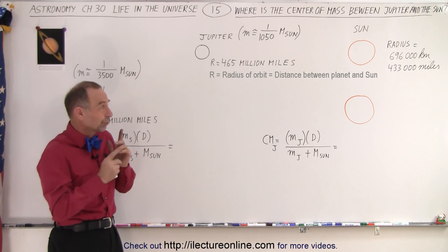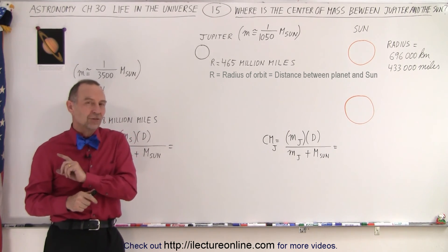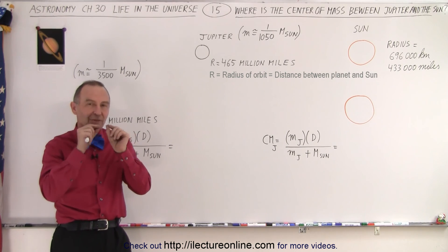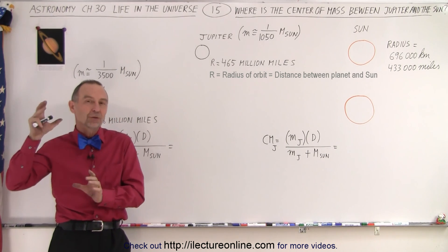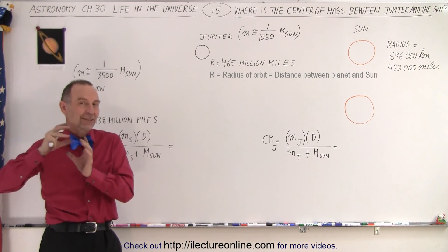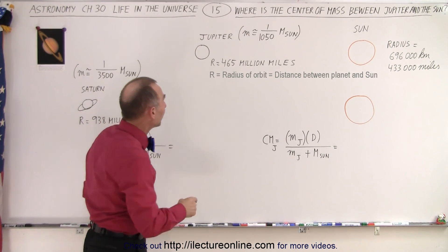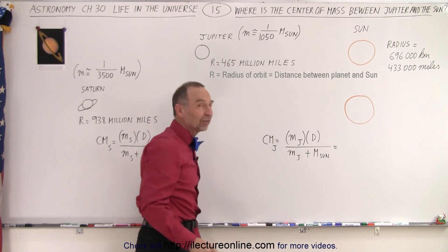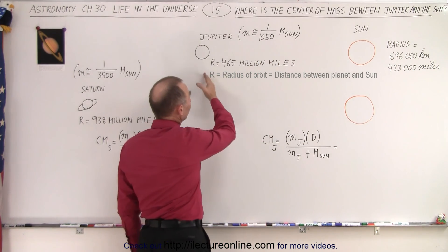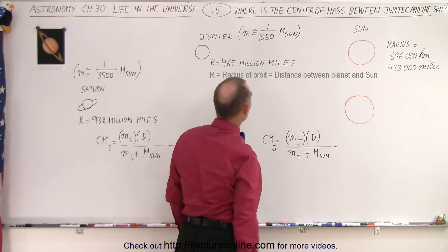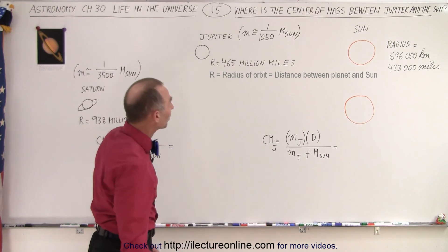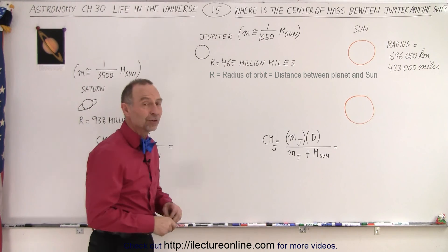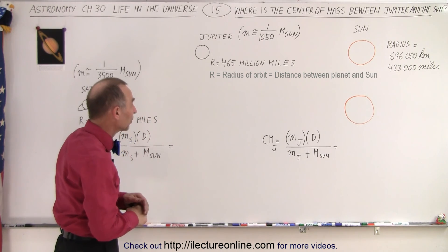We're going to first calculate the center mass, the location where the common center mass is between the Sun and Jupiter, and then between Saturn and the Sun. So Jupiter has a mass which is a little bit less than 1/1000 the mass of the Sun, and it's at a distance of 460 million miles, which is roughly, if you multiply times 1.6, probably somewhere around 730, 740 million kilometers.